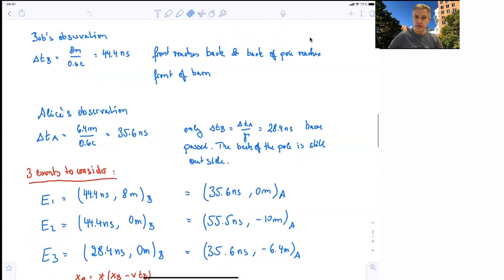So we want to consider three different events. The first event is after 44 nanoseconds and at a space of 8 meters in Bob's reference frame. For Alice's situation we just analyzed, 35.6 nanoseconds passed, and in her reference frame, the front of the pole is at 0 meters.